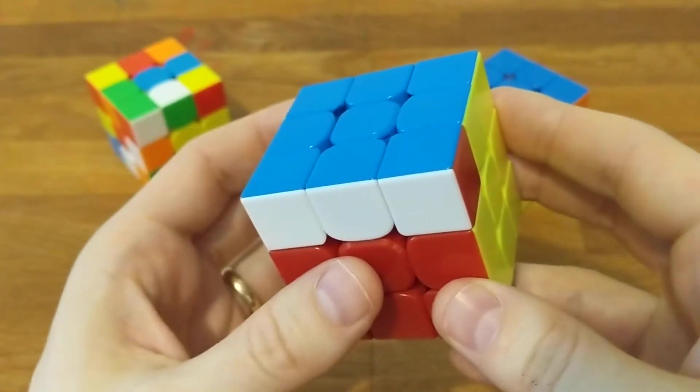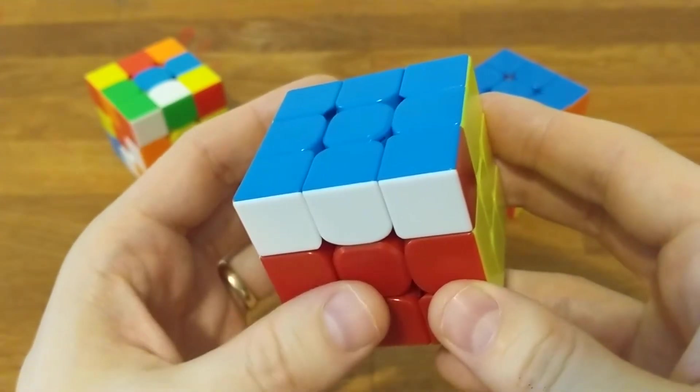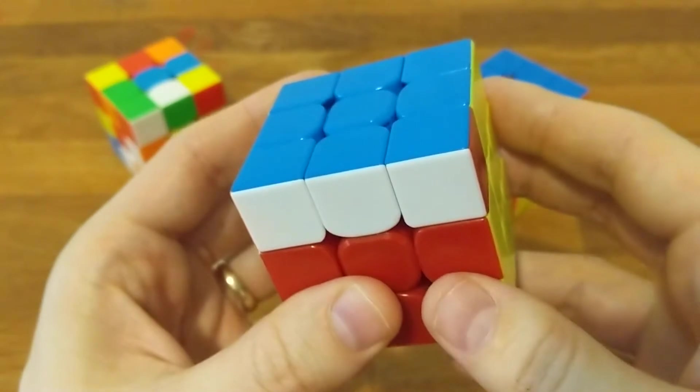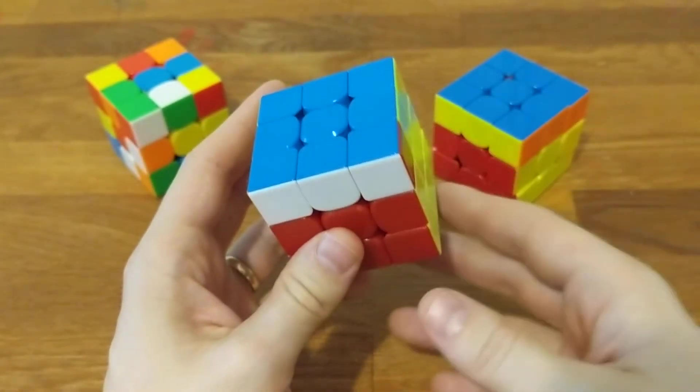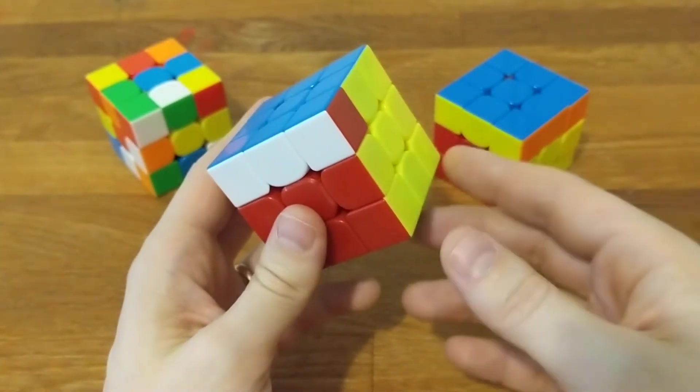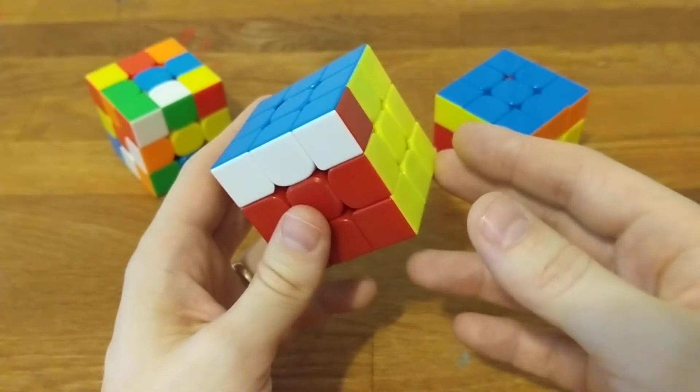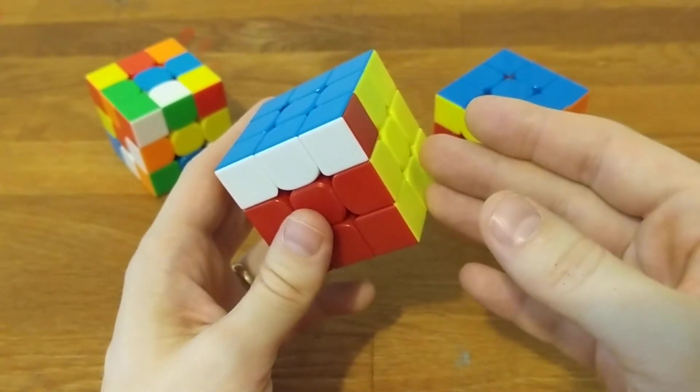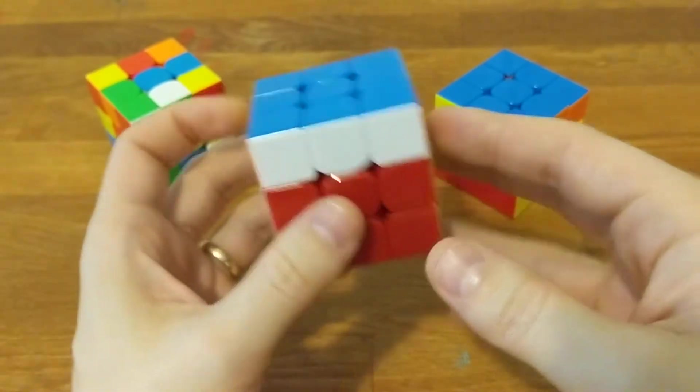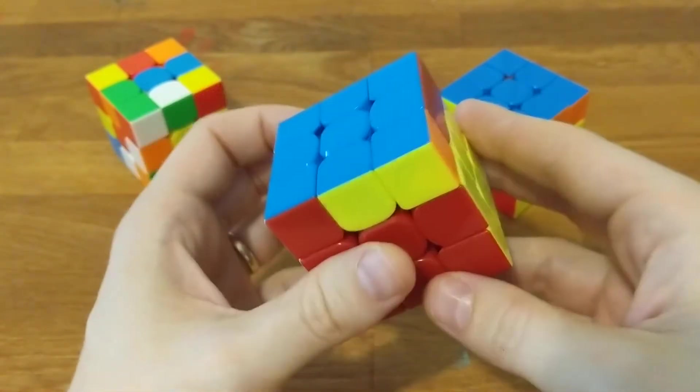So solving an odd parity scramble just requires us to add an extra quarter turn to our solve. This is a problem in blind solving because we can't do any moves until we put on the blindfold, and we don't know whether we have parity until we're halfway through our memo. So let's look at what we can do to solve an odd parity scramble intuitively.